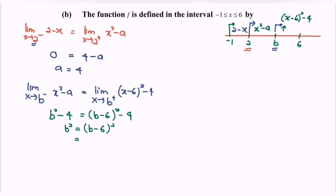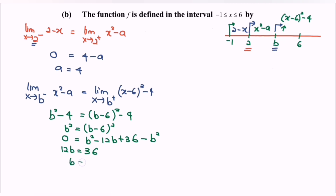Expanding: b squared equals b squared minus 12b plus 36. This gives 0 equals negative 12b plus 36, so 12b equals 36, and therefore b equals 3.